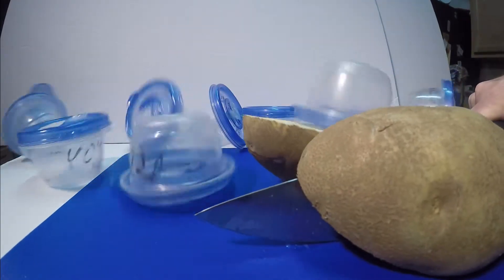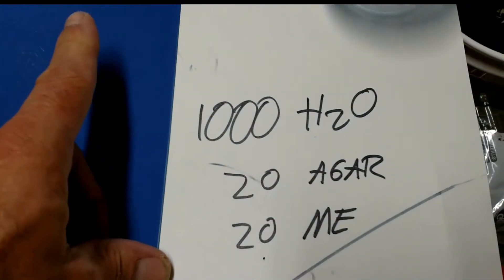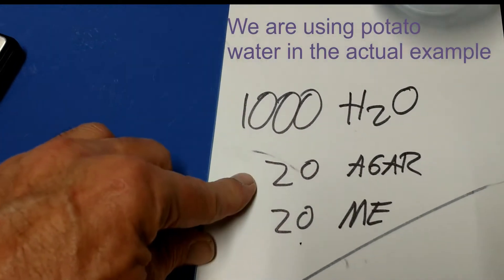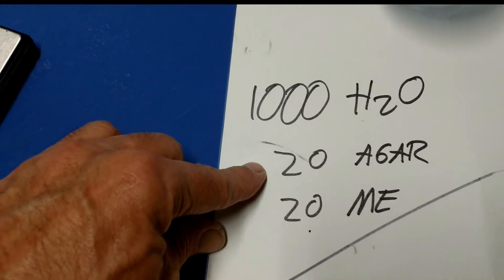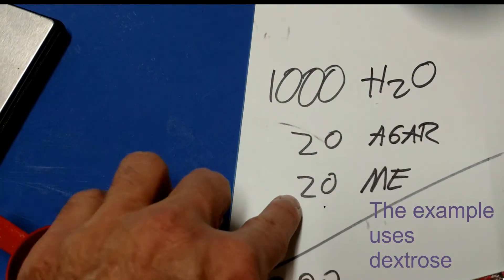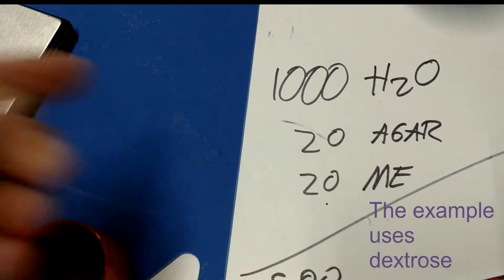Let me show you the recipe real quick. The full recipe is 1,000 milliliters of water, 20 grams of agar, and 20 grams of malt extract or dextrose, whatever you happen to be using for your nutrient.